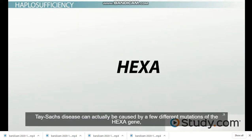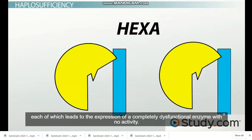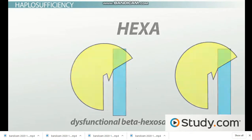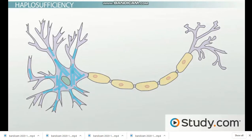Tay-Sachs disease can actually be caused by a few different mutations of the Hex-A gene, each of which leads to the expression of a completely dysfunctional enzyme with no activity. When an individual has two copies of a Tay-Sachs allele, they have no functional beta-hexosaminidase A activity. As a result, GM2 ganglioside quickly builds up in the neurons and Tay-Sachs disease occurs.